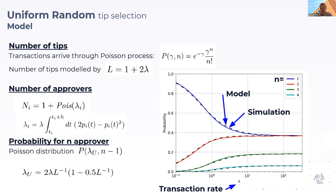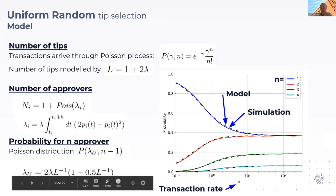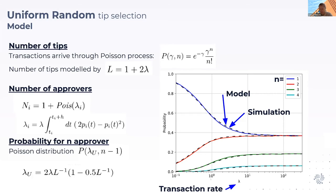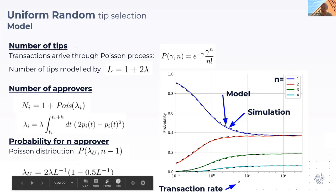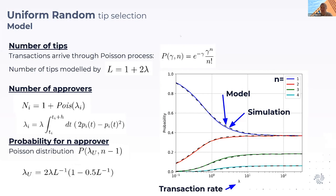As we show here on the right, for a large range of transaction rates, we find that the simulation is actually agreeing very well with the model. So we can perform this. This was for the uniform random tip selection.